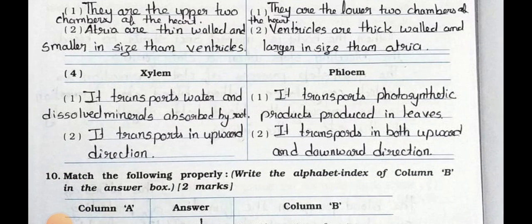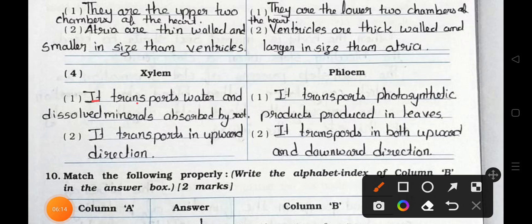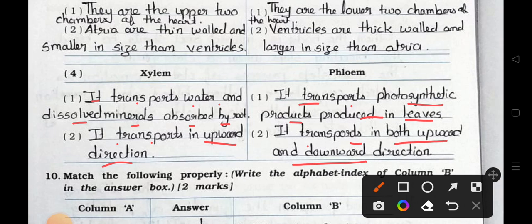Question number 4: Distinguish between xylem and phloem. Point 1: Xylem transports water and dissolved minerals absorbed by roots; phloem transports photosynthetic products produced in a leaf. Point 2: Xylem transports in the upward direction; phloem transports in both upward and downward directions.